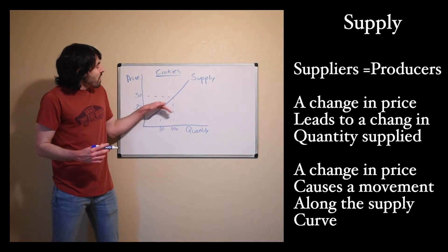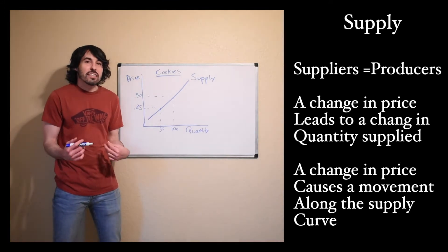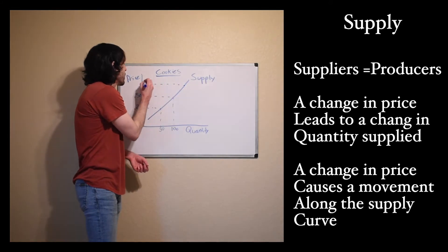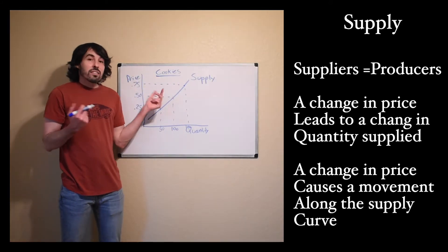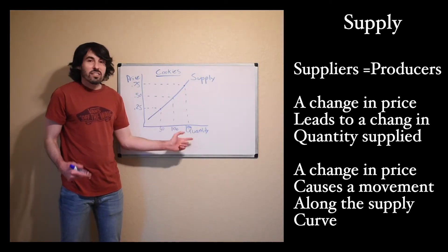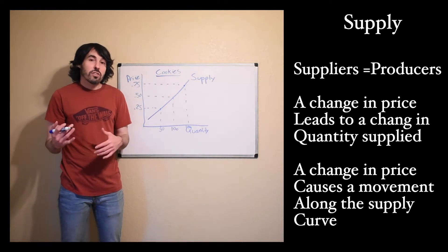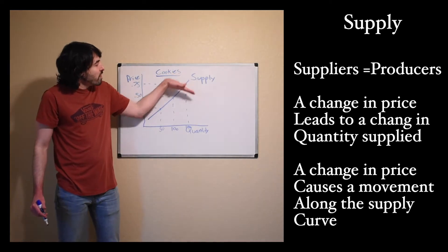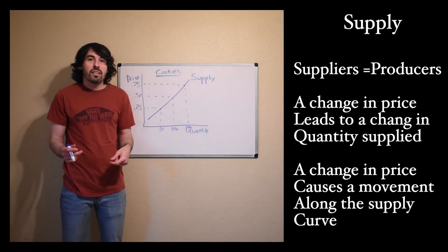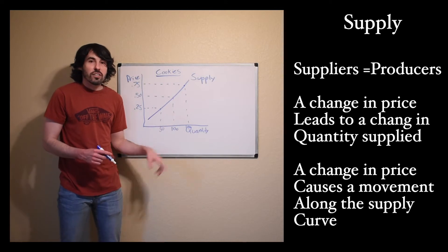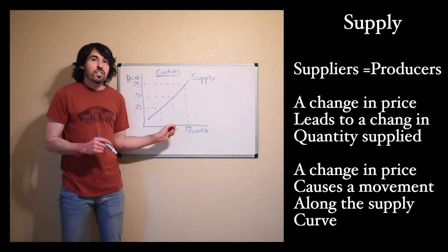There's not as much profit incentive there, so it isn't as lucrative for them to make cookies. However, if the price rises — maybe people are buying more cookies — as the price rises to 75 cents, the quantity supplied for cookies is going to increase to like 150. Now producers of cookies are going to be willing to make more because there's a chance to get more profit now that the price is higher. A change in the price is going to cause a movement along the supply curve — a change in the quantity supplied.